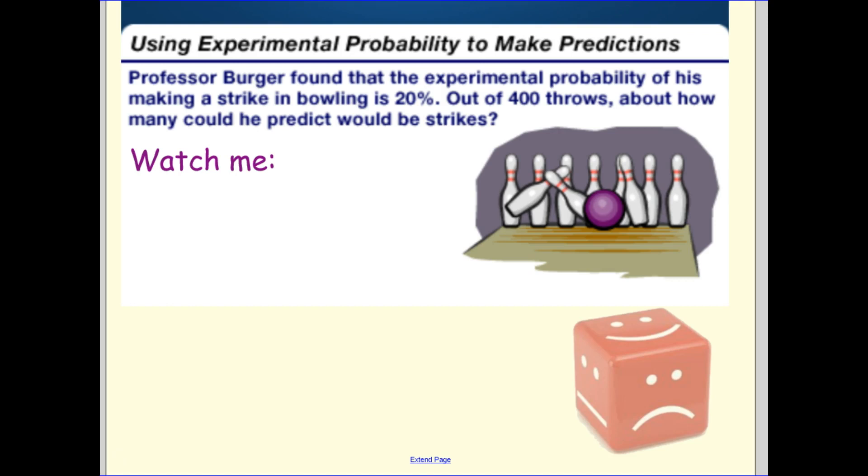Okay. Professor Berger found that the experimental probability of him bowling a strike is 20%. So if he throws 400 times, how many times would he predict to get a strike? Well, I'm going to put my probability on one side, but I'm going to write it as a fraction this time. And I'm going to put my prediction on the other side. I want to know how many out of 400. So again, I see I got myself an easy relationship here. Timesing by four to get from one side to the other. 100 times four is 400. So 20 times four is 80. So he can predict he's going to get himself 80 strikes.